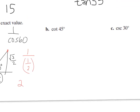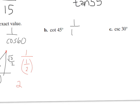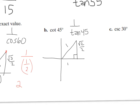And then part b: the cotangent of 45. First I'm going to find the tangent of 45. In a 45-45-90 triangle, the hypotenuse is 1, and the legs are root 2 over 2 and root 2 over 2. Tangent is opposite divided by adjacent, so root 2 over 2 divided by root 2 over 2 is just 1. So it's 1 over 1, because tangent of 45 is 1, so cotangent of 45 is just 1.